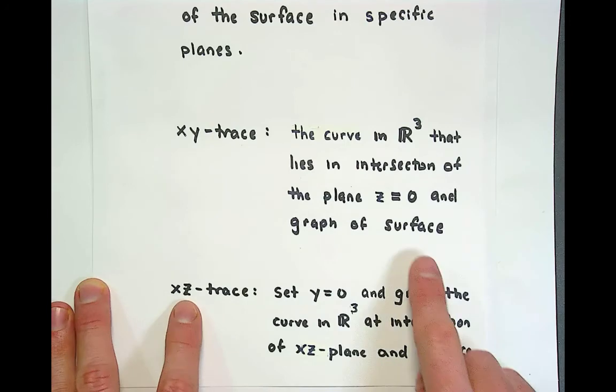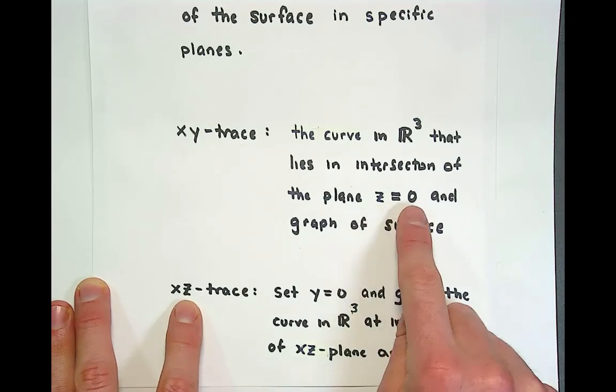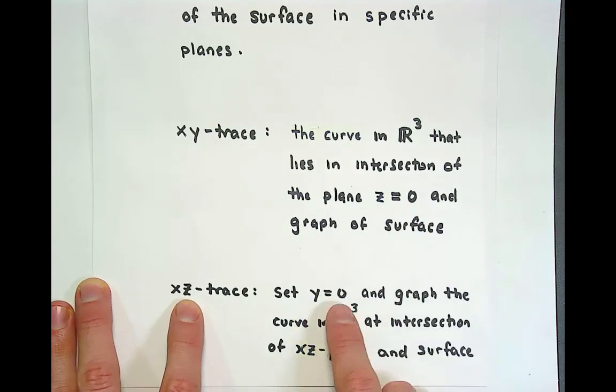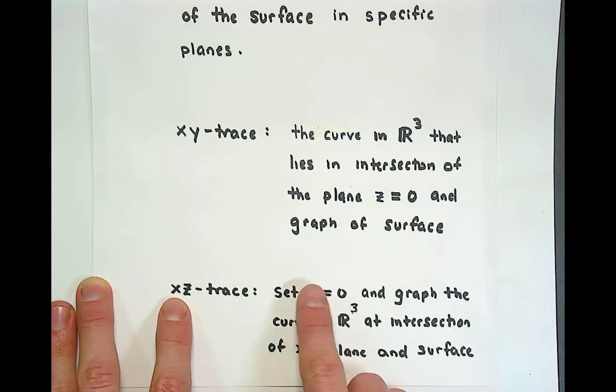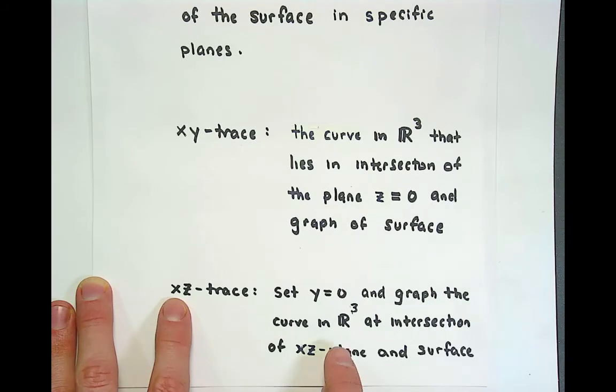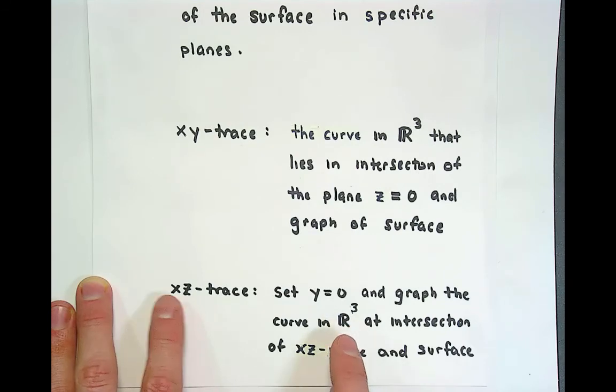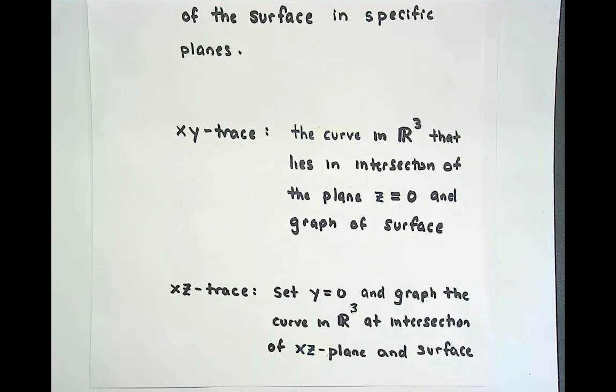The xz trace doesn't come from setting z equals zero it comes from setting y equal to zero. In other words we look at the intersection of the xz plane, the one encoded by y equals zero, and the graph of the curve in R3. That intersection, the intersection of the xz plane and the surface in R3, that's going to be called the xz trace.